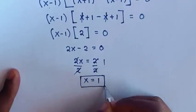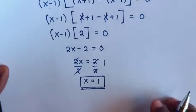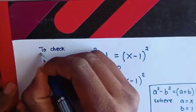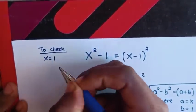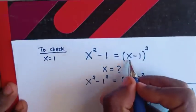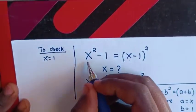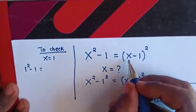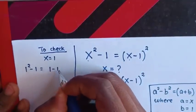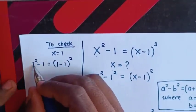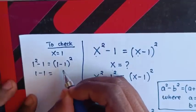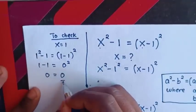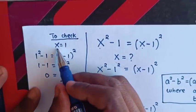Therefore, this is the final value of x. Now to check if our answer is correct, we substitute the value x equals 1 into the equation. So it will be 1 squared minus 1 equals (1 minus 1) squared. That gives 1 minus 1 equals 0 squared, so 0 equals 0. It's true for x equals 1.